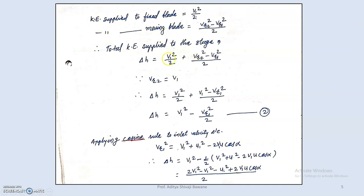For the enthalpy drop delta h: kinetic energy supplied to the fixed blade is v1 squared divided by 2, and for the moving blade it is (vr2 squared minus vr1 squared) divided by 2. Total kinetic energy supplied to a stage equals v1 squared over 2 plus (vr2 squared minus vr1 squared) over 2. Since vr2 equals v1 for Parsons turbine, delta h equals v1 squared minus vr1 squared, all divided by 2.